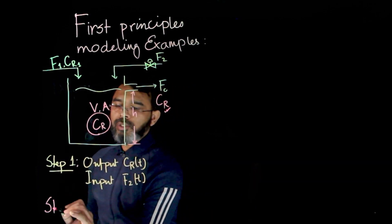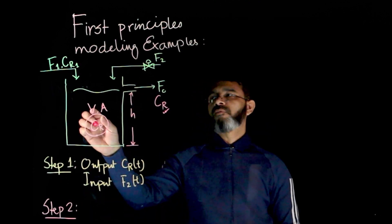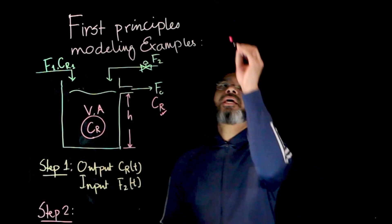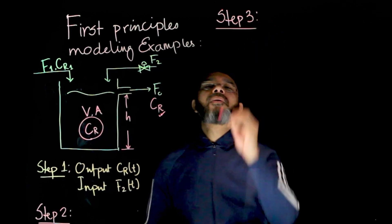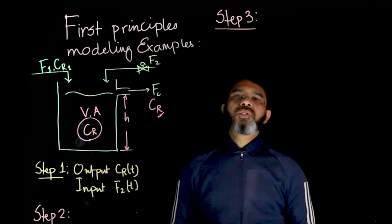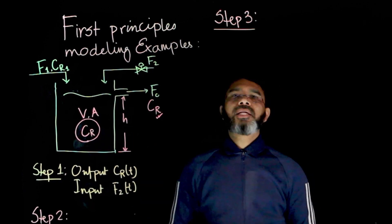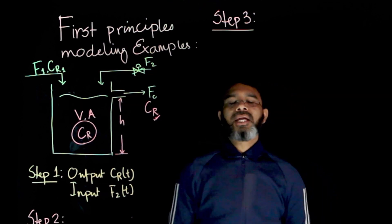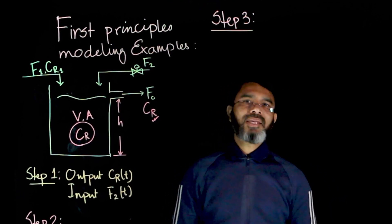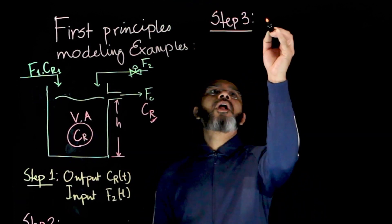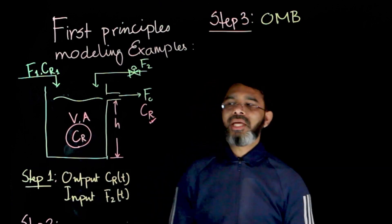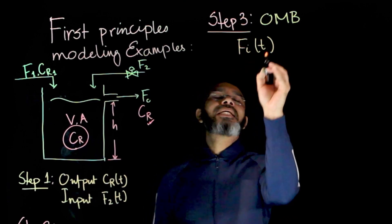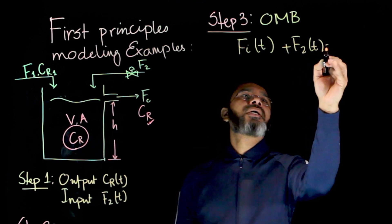In step two, we gather information about the process. For this case, the volume is constant. We'll move directly to step three and write down the balance equations. We have a component here so the component balance will be useful. Temperature dependence is not mentioned, so we assume temperature is not a variable and the energy balance is irrelevant. For the overall mass balance, accumulation equals in minus out. Since volume is constant, we get Fi(t) plus F2(t) equals F-naught(t).